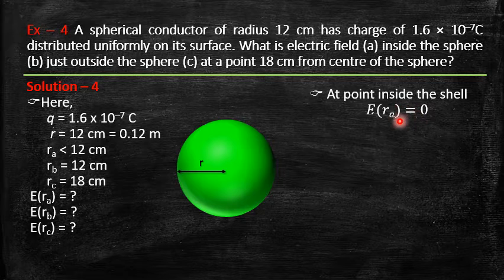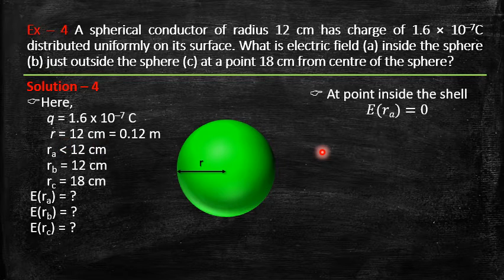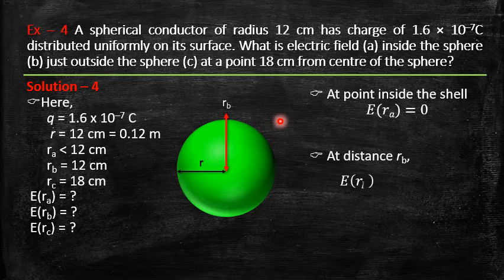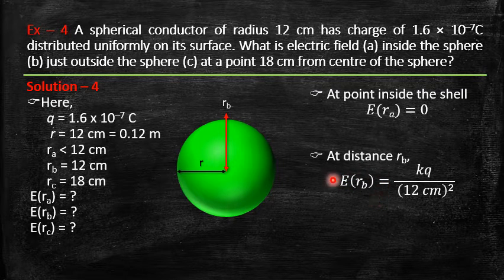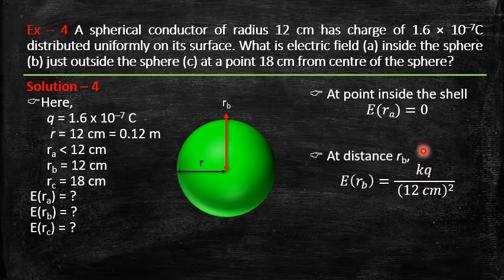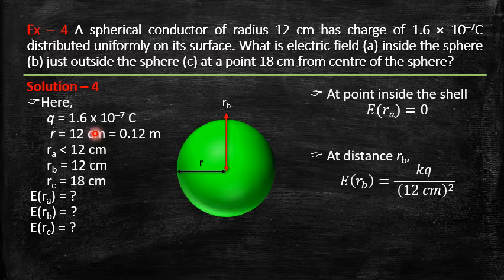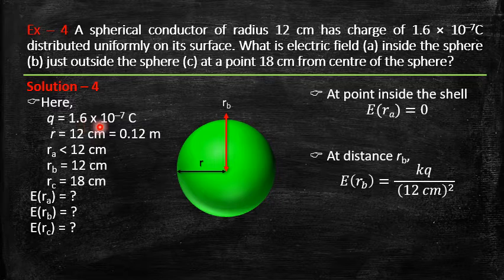Wherever you are inside — at 2 cm, 3 cm, or 4 cm — if the distance from the center is less than 12 cm, the electric field is zero. For the second point, just outside the surface, we find the electric field at r = 12 cm using E = kq/r². Outside the shell, the shell behaves like a point charge of 1.6×10⁻⁷ C located at the center.